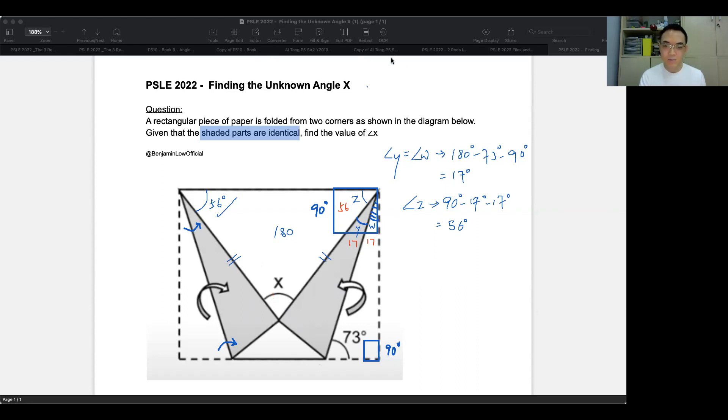So angle X is 180 minus the two 56s, which is the base of the isosceles.